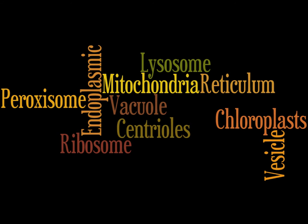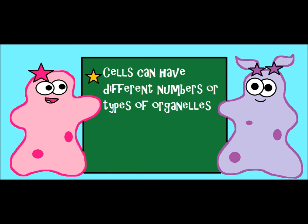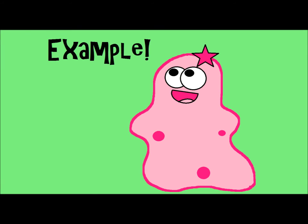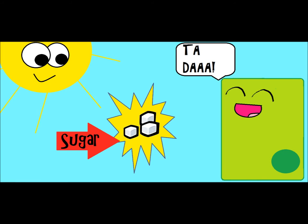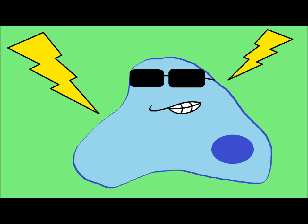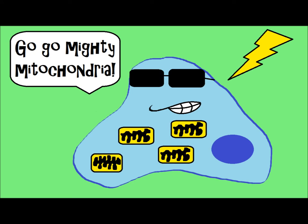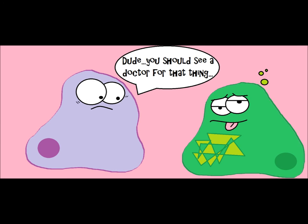We're not going to go into all the different types of organelles today — that's pretty easy information to find. But one thing worth mentioning: if a cell has a certain function, it might have more of a certain kind of organelle, or a different kind than another cell. For example, plant cells — a type of eukaryote — make sugar from the sun and have an organelle called a chloroplast that animal cells don't have. And muscle cells in your body need a lot of energy, so they actually have a lot of mitochondria compared to some other human cells, because they have to produce so much energy. The types and quantity of organelles can vary based on different cell functions.